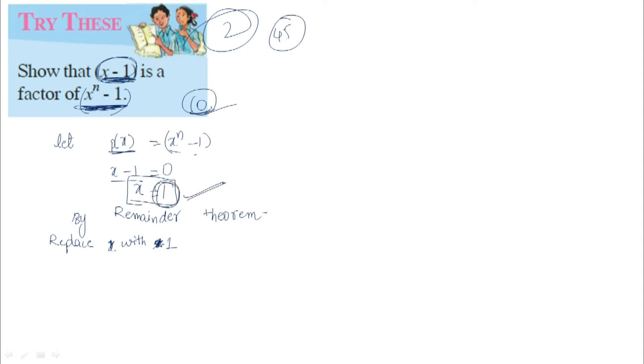So, P(x) we replace with 1 to find the remainder. So, P(1) equals 1^n-1. 1^n equals 1, so 1 minus 1 equals 0.